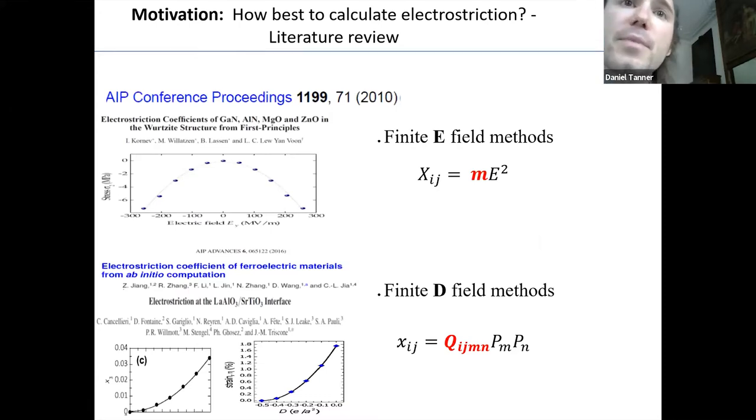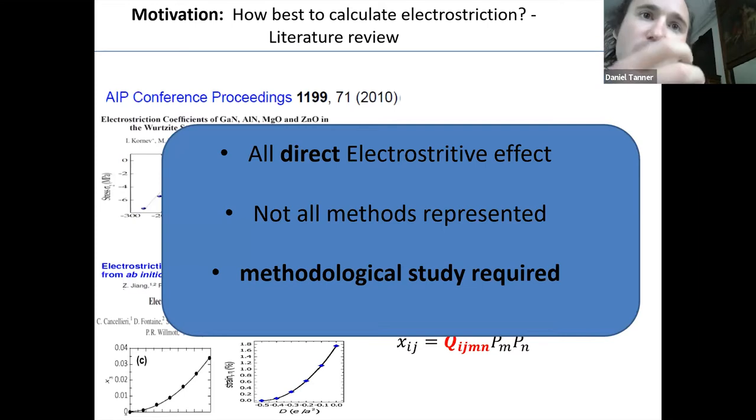So in the literature, most calculation or all calculation of electrostriction has so far been using finite field methods, and they've also all been using Abinit. So the first of which was by Kornjev et al, and they use the finite field method. They did DFT under a condition of fixed electric field and relax the internal coordinates to get a stress. And we also have two papers which use the finite D field method. And again, they imposed a fixed displacement field and relaxed around it. So again, these all use what we'll call the direct electrostrictive effect, which will be relaxing, measuring the relaxation in result to a field. But not all the possible methods are represented in literature, and that's why we will need a methodological study. That's what motivated this study.